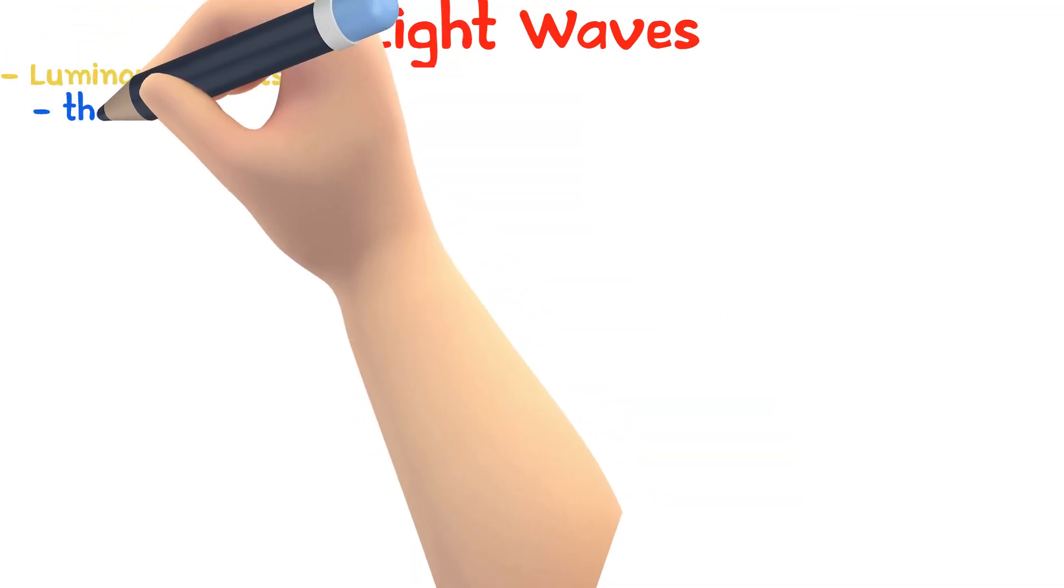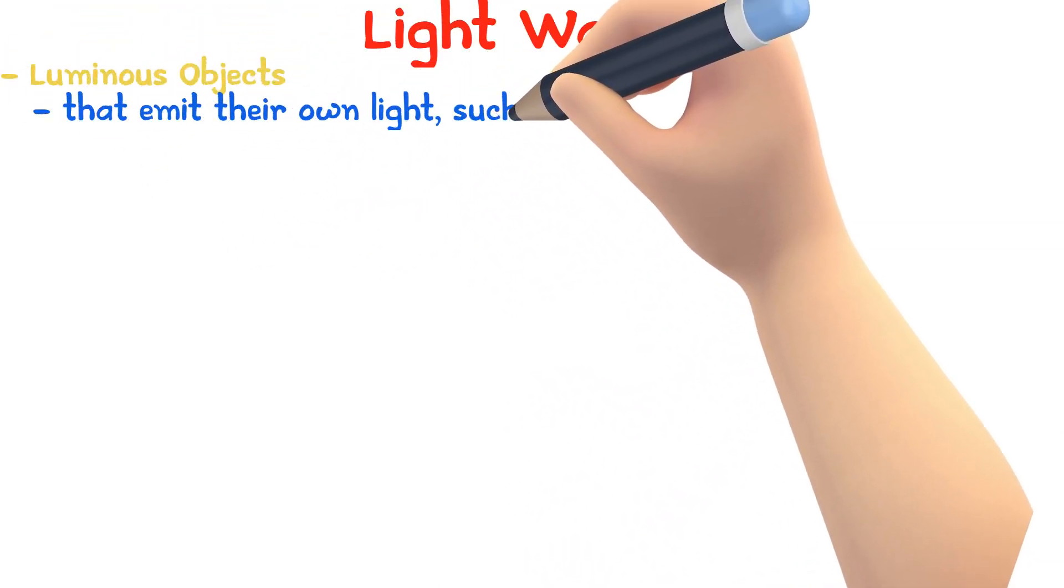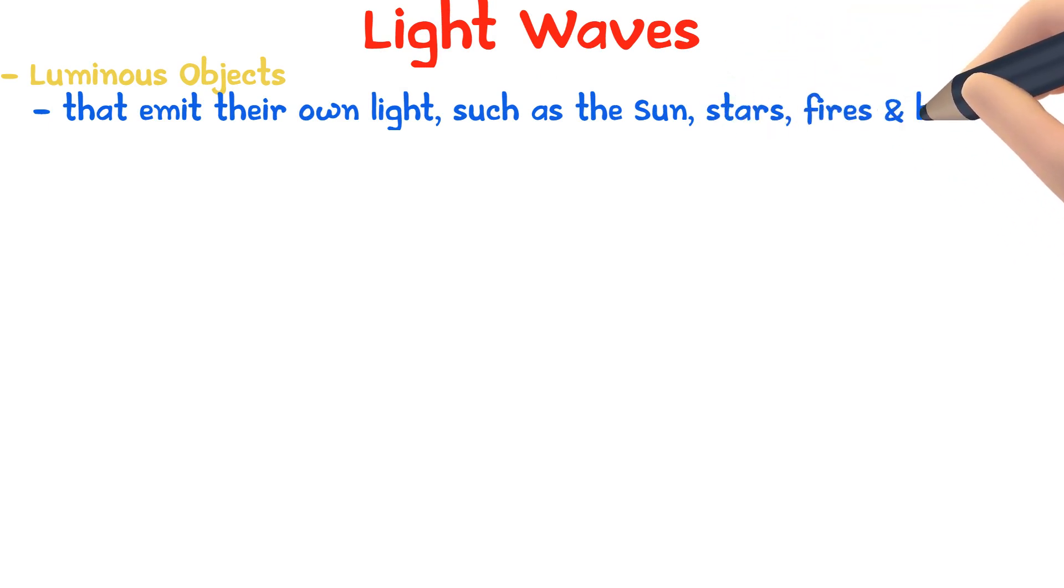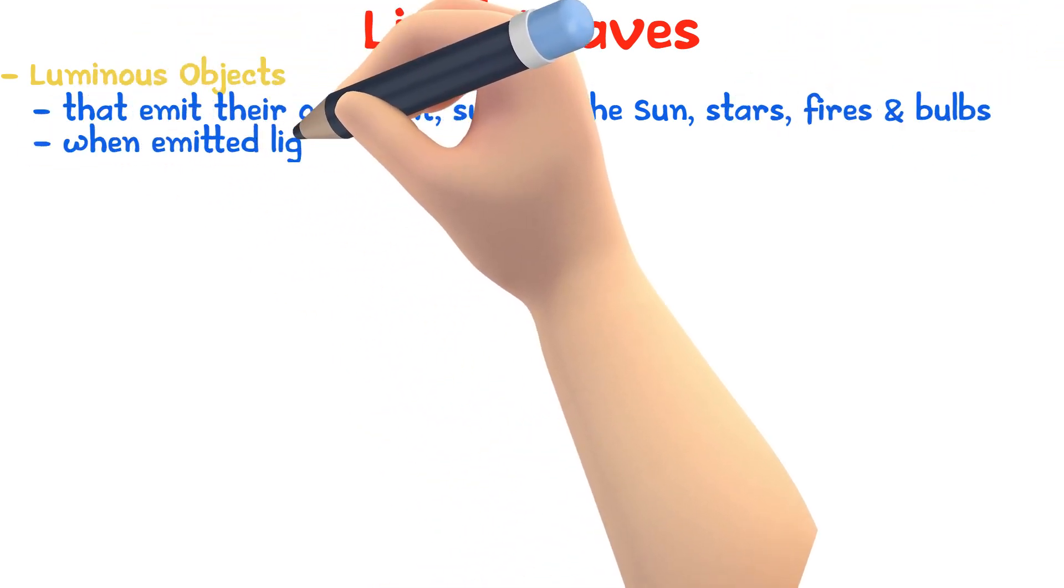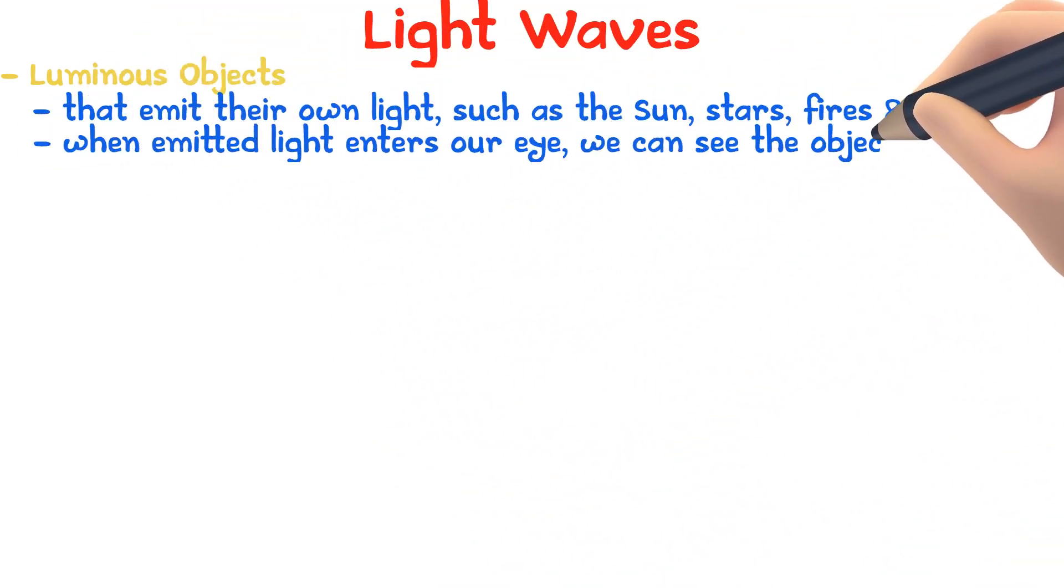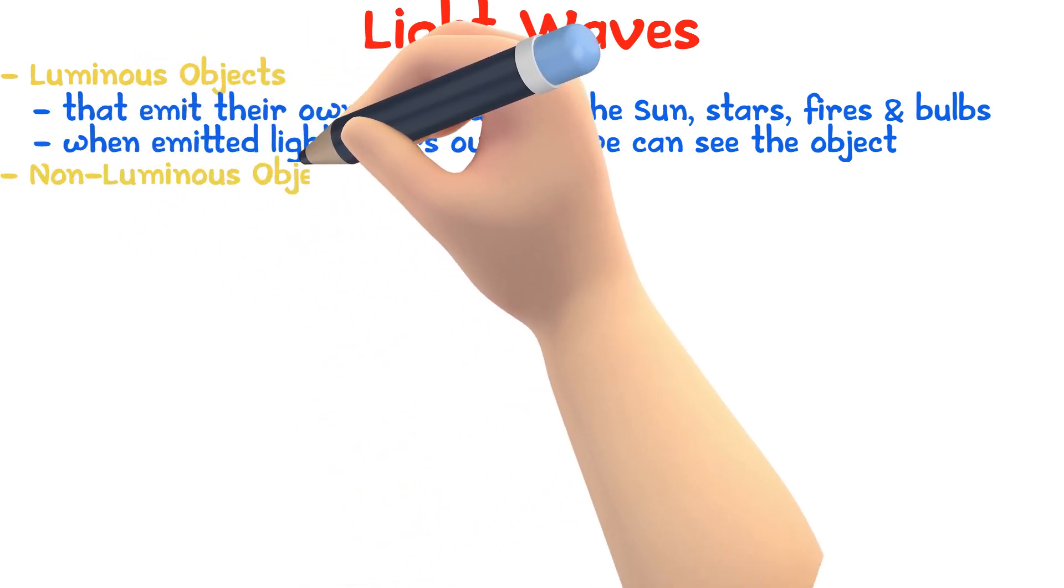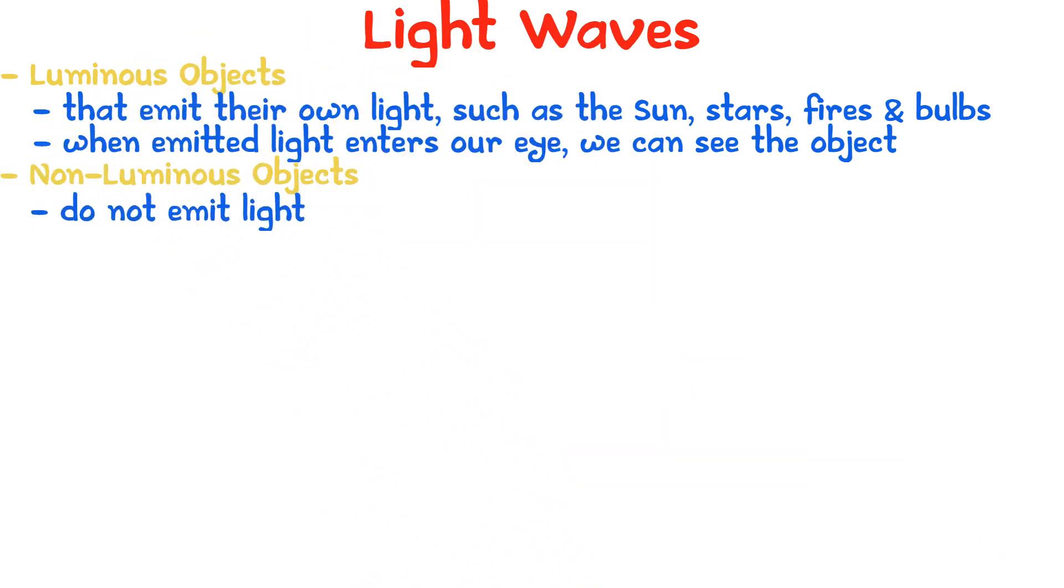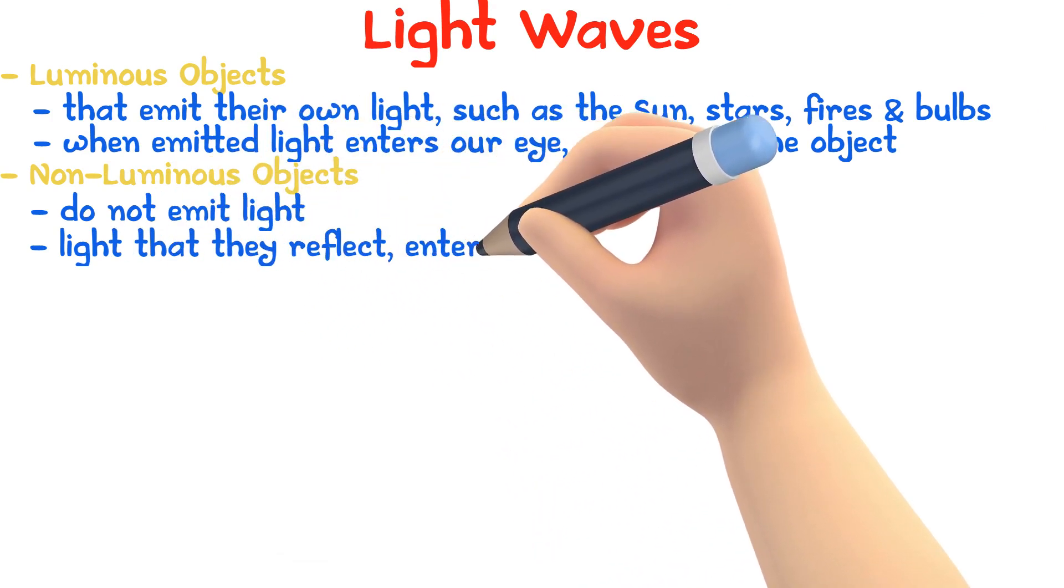Luminous objects are objects that emit their own light such as the sun, stars, fires and light bulbs. When the light emitted enters our eyes, we can see the object. The way we see non-luminous objects that do not emit light is because the light that they reflect enters our eyes.